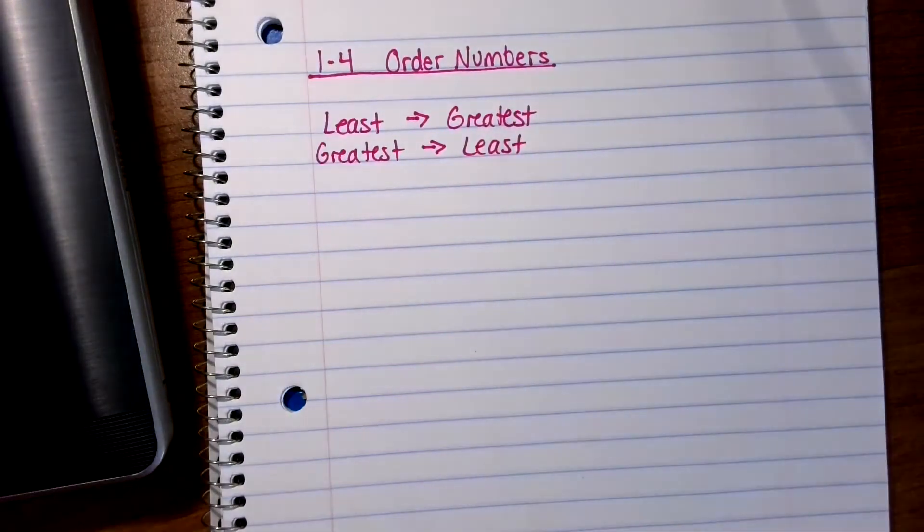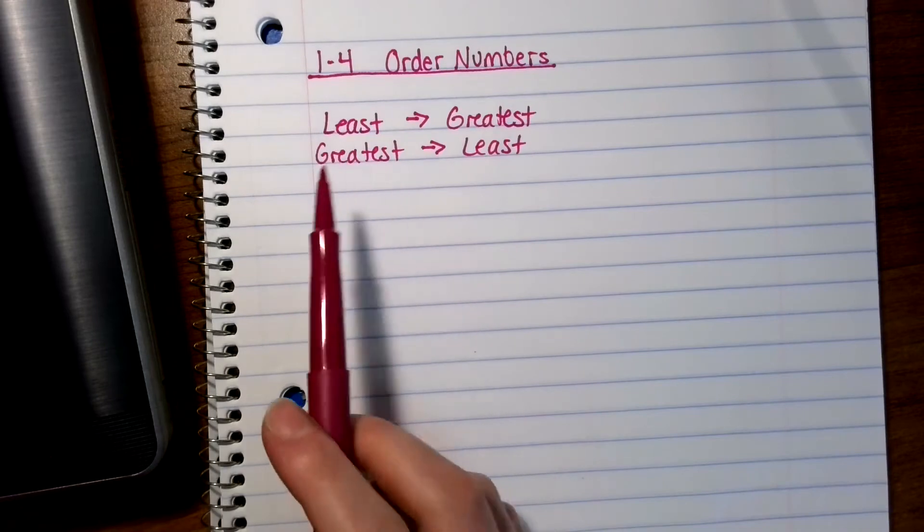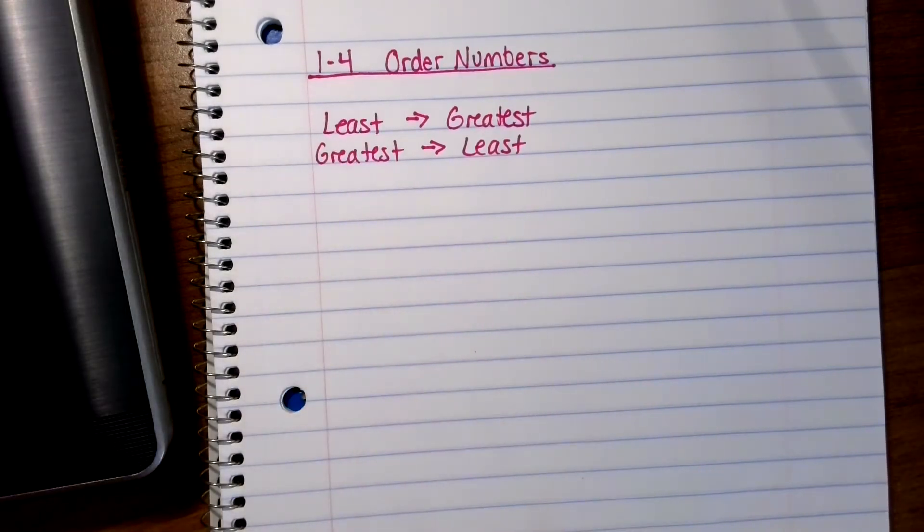Okay, greatest means biggest, least means smallest. So if those words are confusing to you, think of smallest to biggest and biggest to smallest. They mean the same thing.